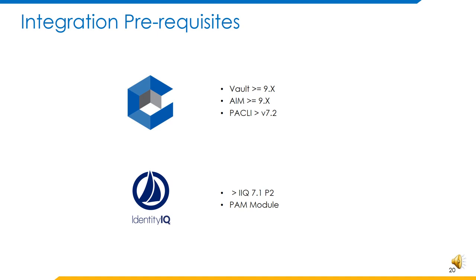Before we proceed further, let us discuss the prerequisites for this integration. The prerequisites on the CyberArk end are that the core CyberArk solution has to be on version 9, Application Identity Manager should be on version 9, and PACLI should be minimum 7.2. The prerequisites on the SailPoint end are that Identity IQ should be minimum on version 7.1 patch 2. Let us proceed further with various installation-related steps, starting with steps on the CyberArk end.